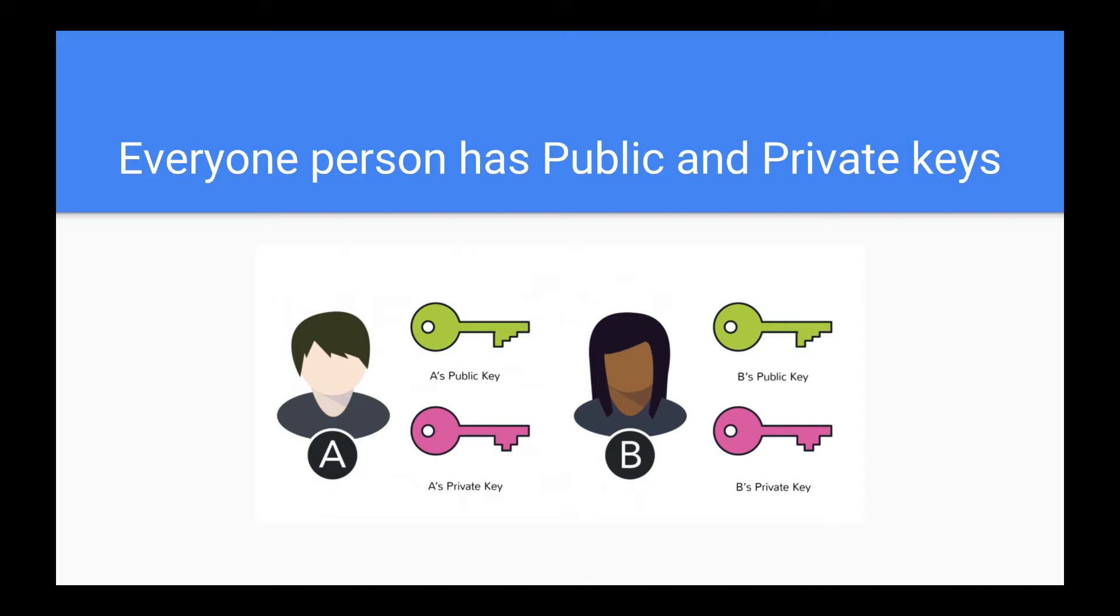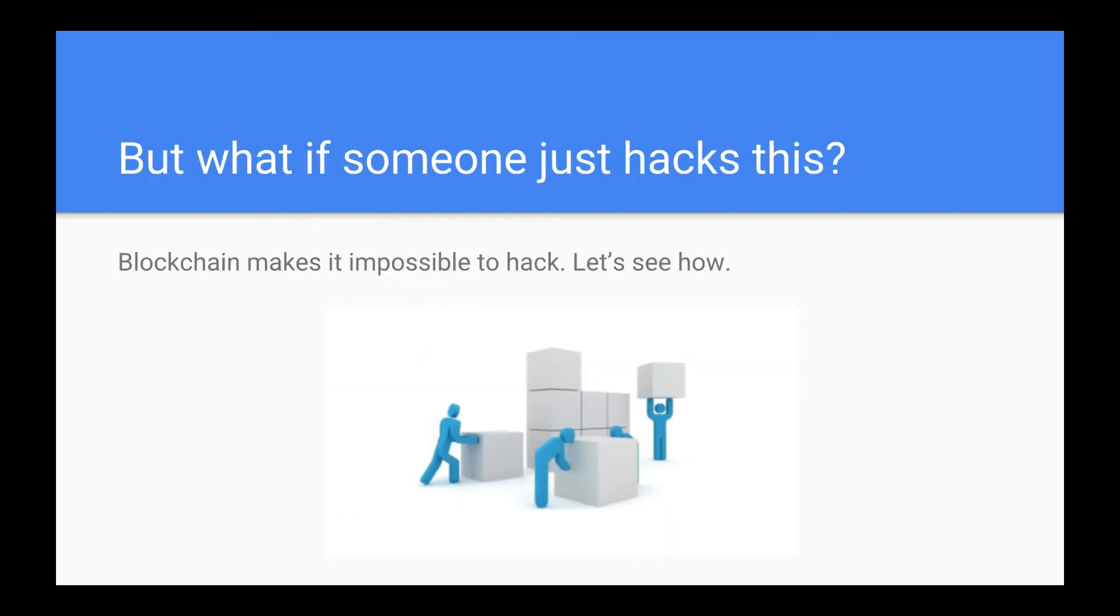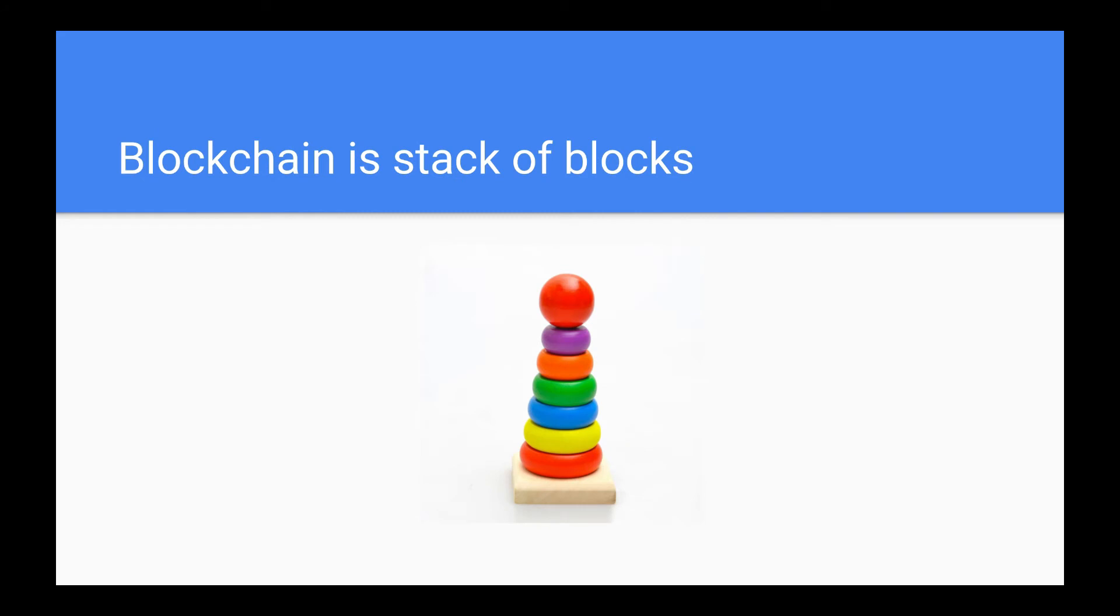Now you might be thinking, this all sounds good but why can't anyone hack this system? What if I just break any of the locker and take out the money or change the information stored there? Well this is where cryptography comes in. Blockchain is designed in such a way that hacking or changing the data incorrectly is almost impossible. To understand this, think of blockchain as a stack of blocks like this with each block containing some information. Now every block in this stack is linked to the other block. So in this example, the yellow block is linked to the bottom red block and the blue block is linked to the yellow block. The top red sphere block is linked to the purple block.